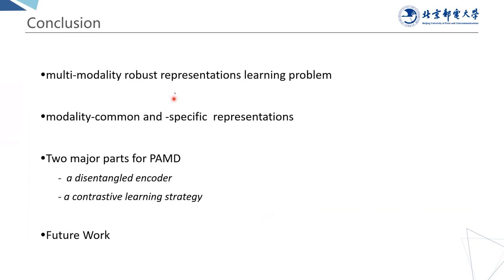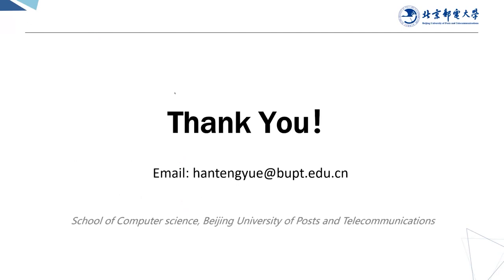In this work, we propose a pre-training framework named PAMD. It contains a disentangled encoder and a contrastive learning module. The disentangled encoder aims to automatically extract modality common characteristics while preserving modality specific characteristics. The contrastive learning aims to guarantee the constraints and gaps between modality disentangled representations. We have shown that both modality common and modality specific representations contribute to improved recommendation performance. This work provides a new perspective on multimodal representation learning for recommendation. That's all for my presentation, thank you.